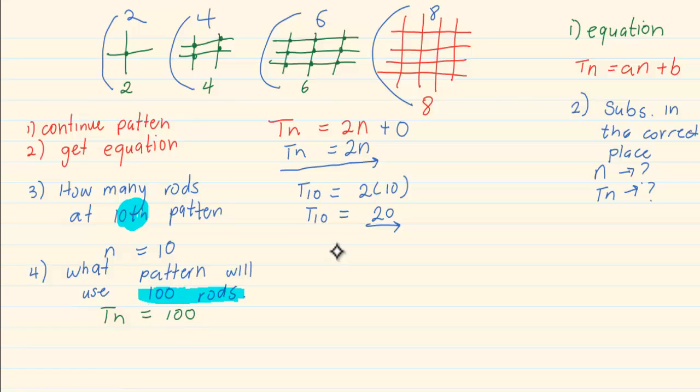So again, we are going to go to our formula. Tn equals 2n. What am I substituting? Tn. Be careful at how you read the question and how you understand Tn and N. Now at Tn's place, I am going to put a hundred, equals 2n. What they are telling us, at the fiftieth pattern, I will use a hundred rods.